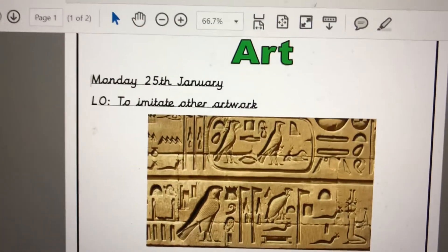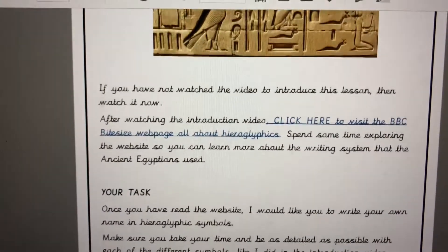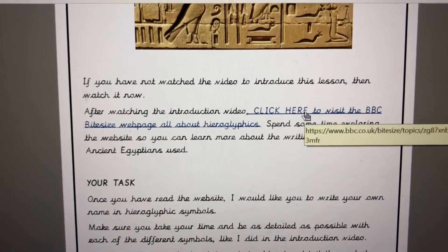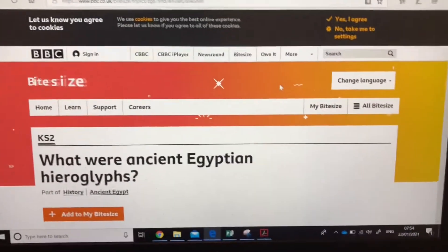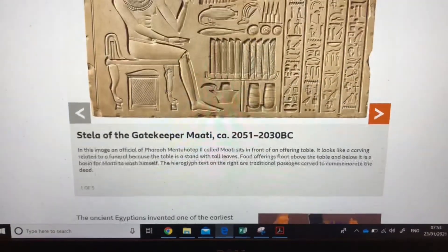But there's some of the earliest evidence of people doing some writing. So your job today is to go to the normal place and then you'll find some information. Once you find the information page, it will look like this. If you haven't watched the video, watch it now. After watching this introduction video, click here to visit the BBC webpage all about hieroglyphics.